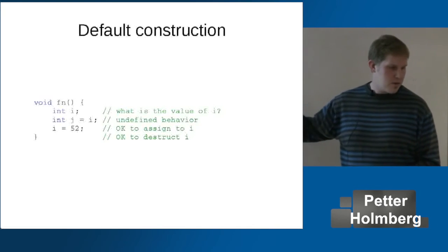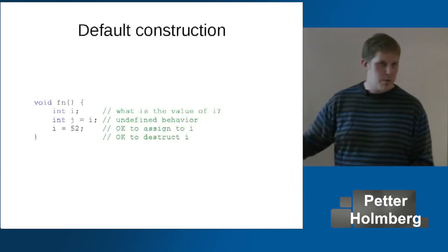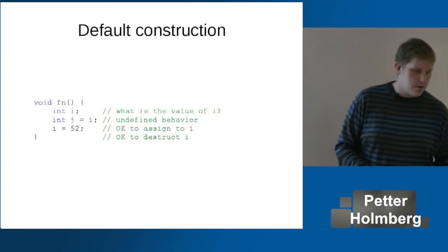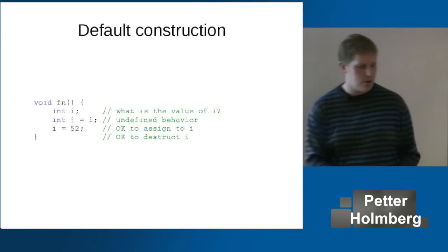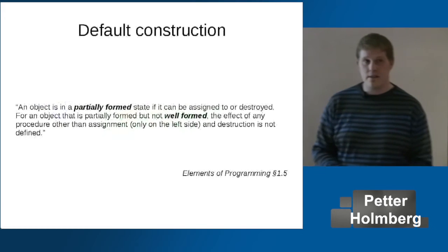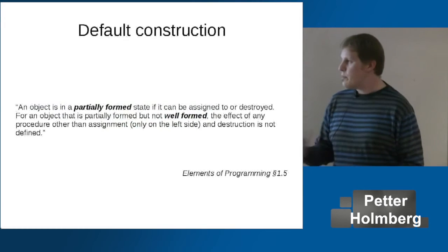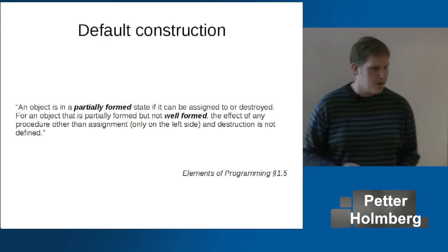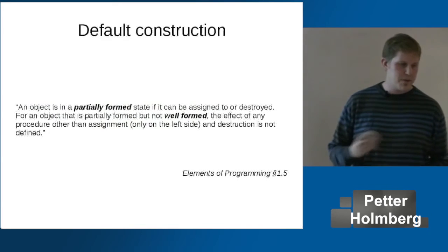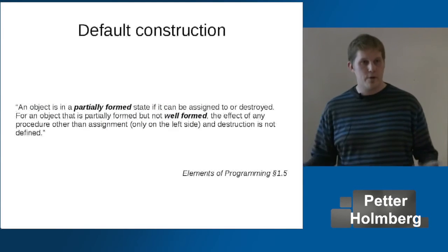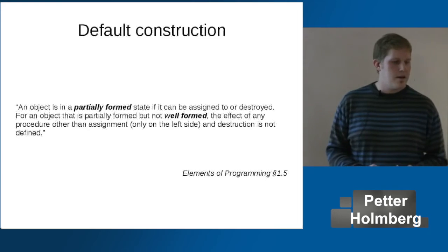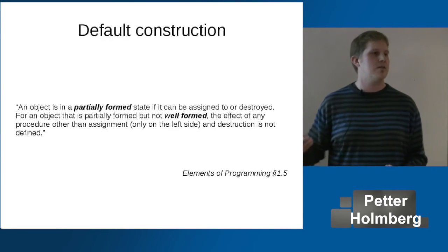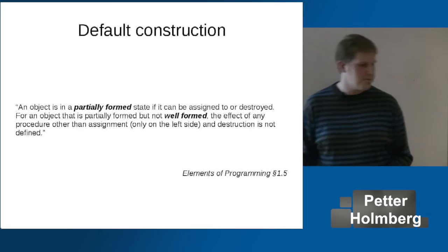Whether we assign to it or not, when it falls out of scope and gets destroyed, that should be okay as well. Stepanov has a name for this — he calls it the 'partially-formed state'. An object is in a partially-formed state if it can be assigned to or destroyed. If it's partially-formed but not well-formed, the effect of any other procedure than assignment and destruction is not defined.